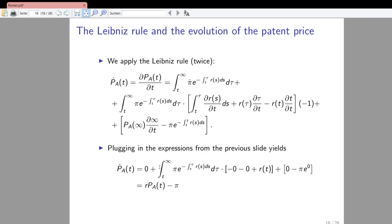The result is that the time derivative of the price of blueprints equals the interest rate r(t) times the price of blueprints p_A, minus operating profits π. This is a no-arbitrage relationship that must hold in equilibrium, and it has a very intuitive explanation.